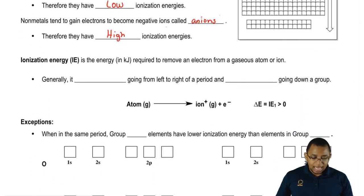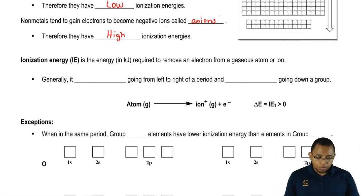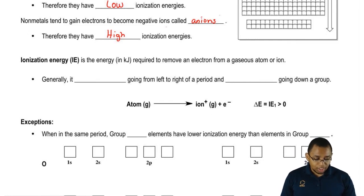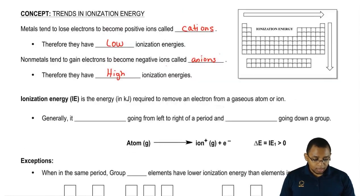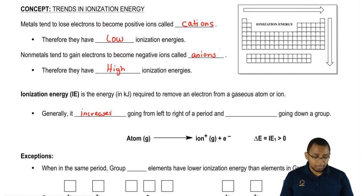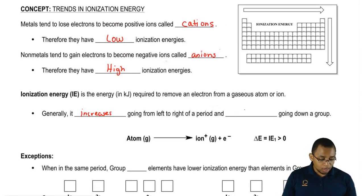Ionization energy is the energy in kilojoules or joules required to remove an electron from a gaseous atom or ion. Generally speaking, ionization energy is going to increase going from left to right of a period, and it's going to decrease going down a group.